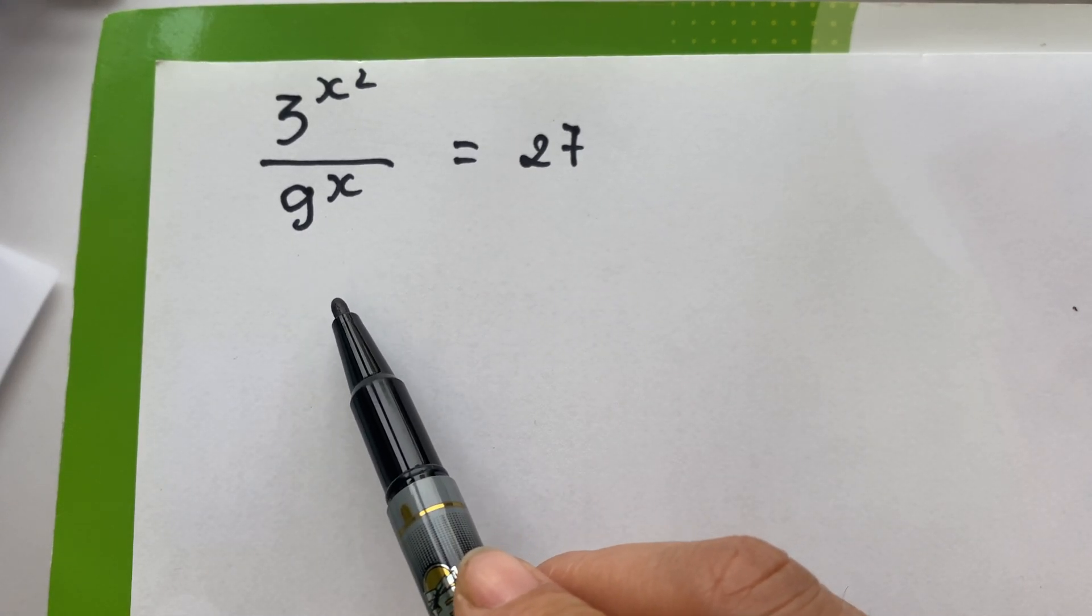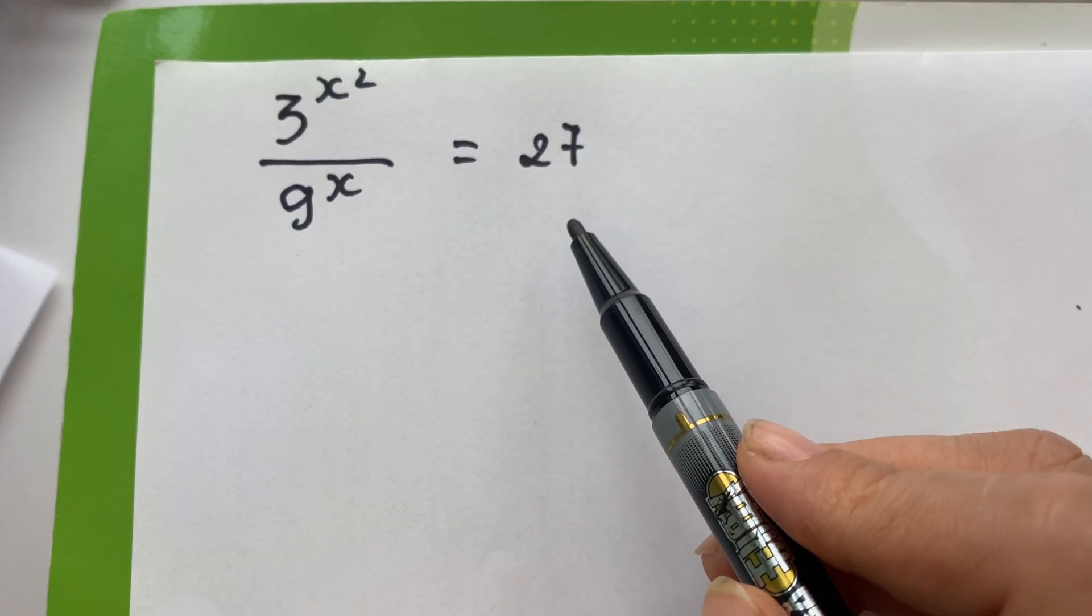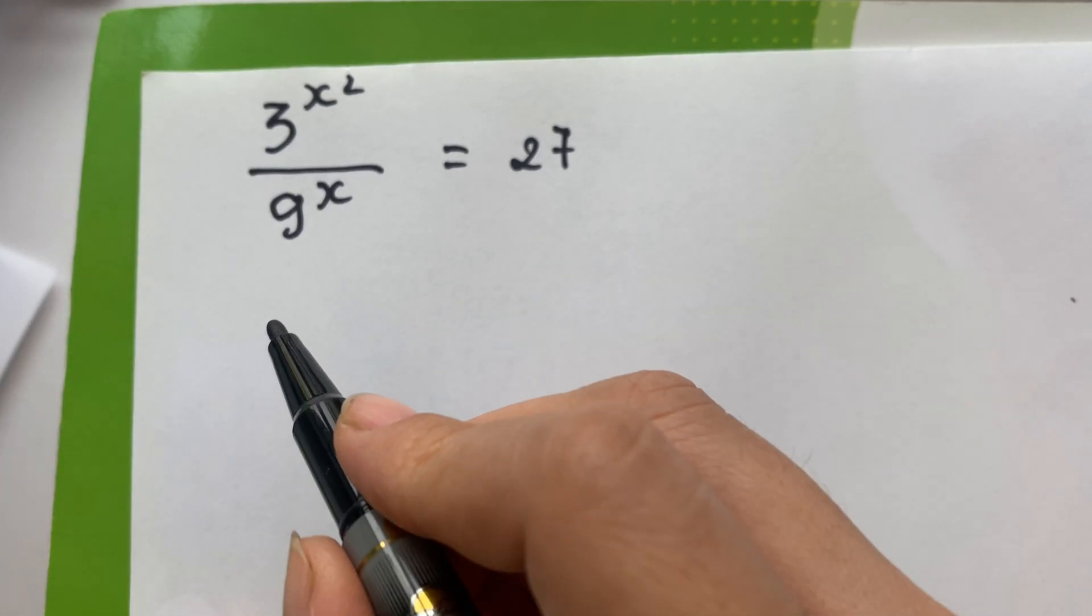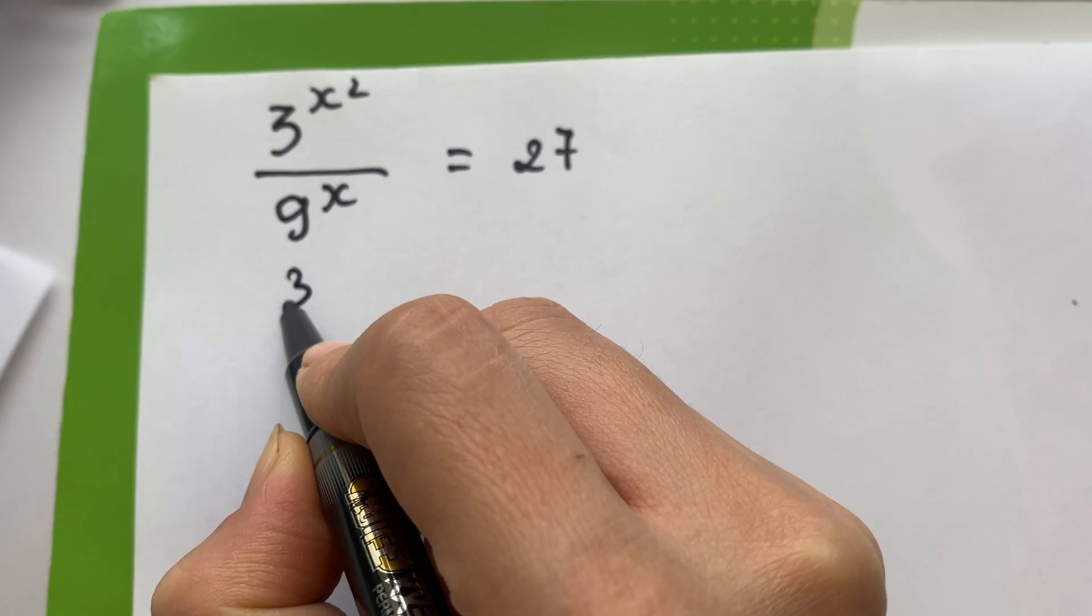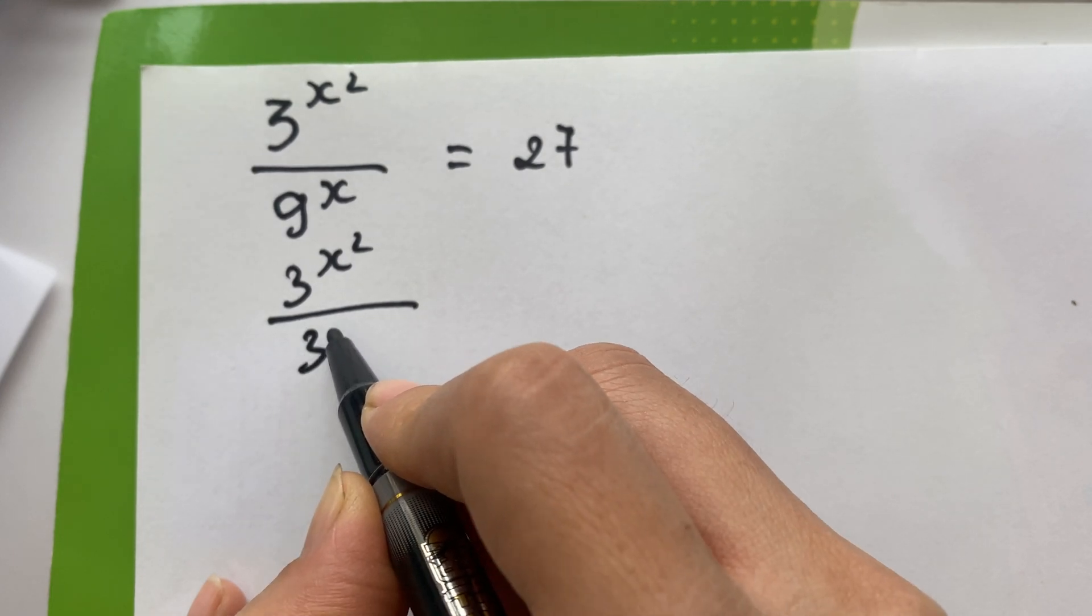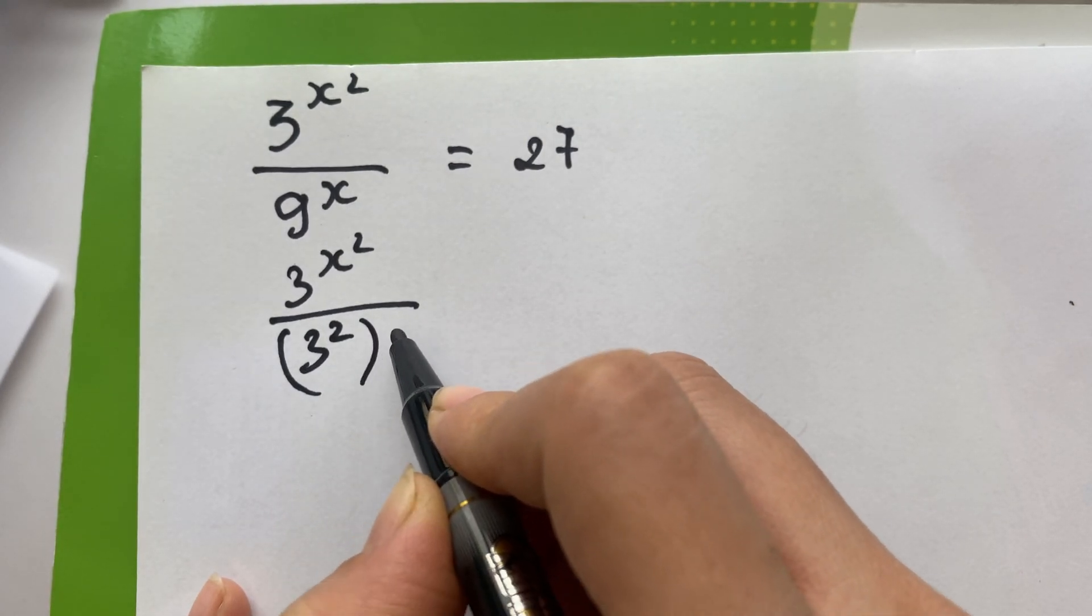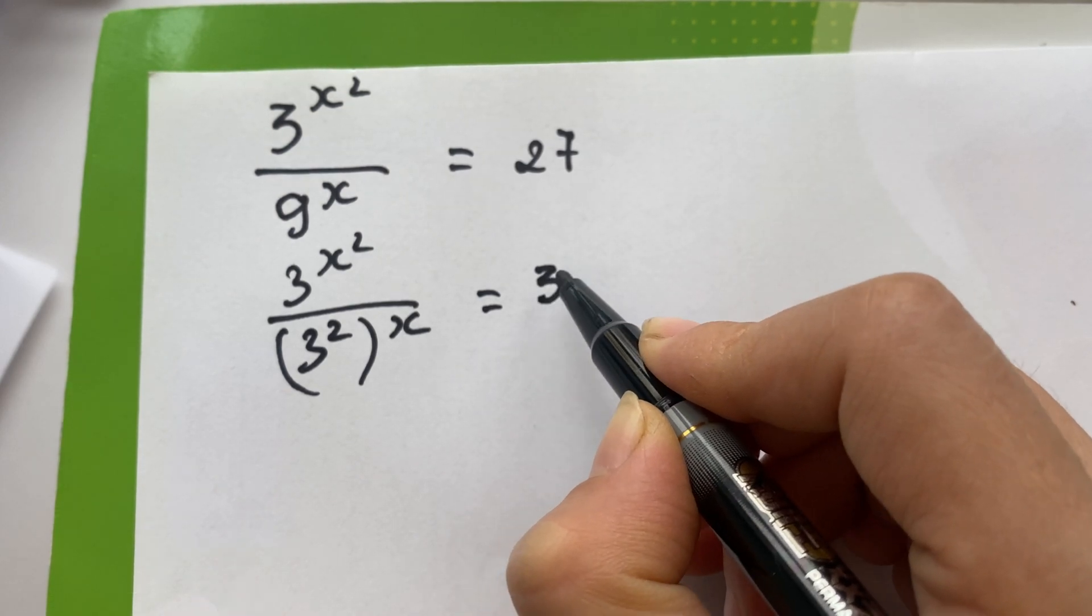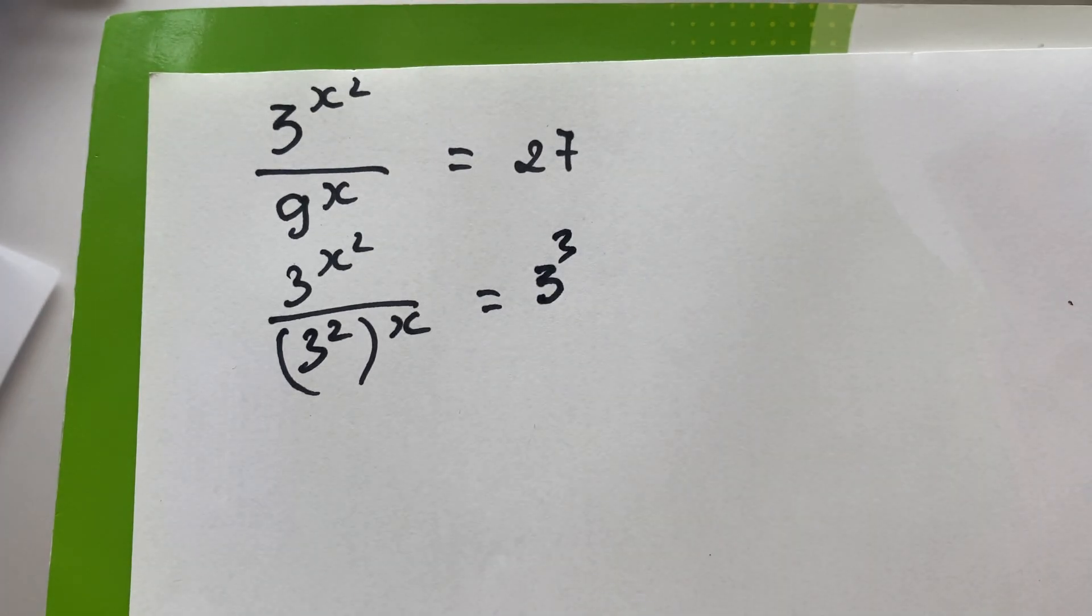9 is the same as 3 square and 27 is the same as 3 cube. So we have 3 power x square over 3 square bracket power x equals 3 power 3, right?